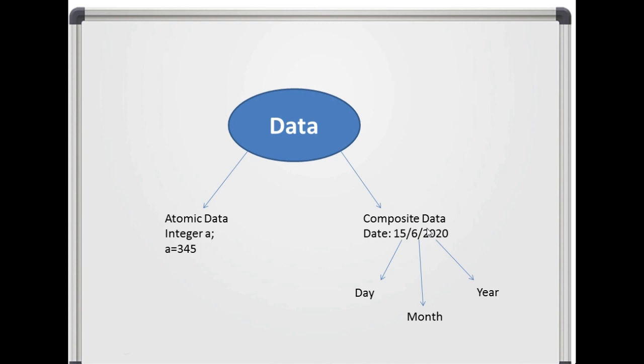Data of two types: Atomic Data and Composite Data. Atomic data are non-decomposable entities and composite data you can decompose. When you are using the integer a,